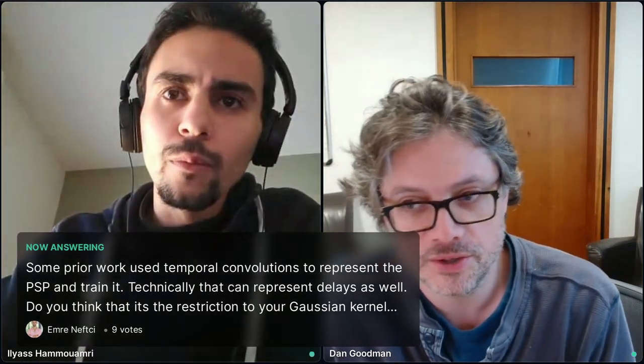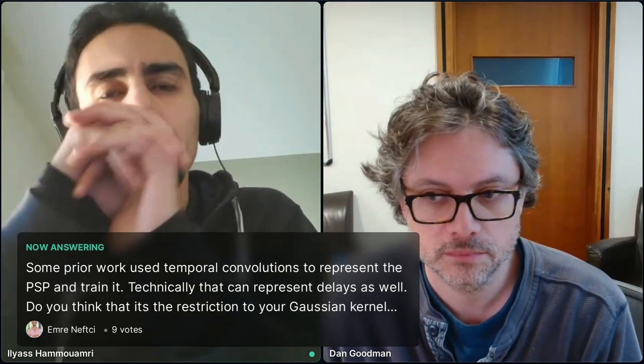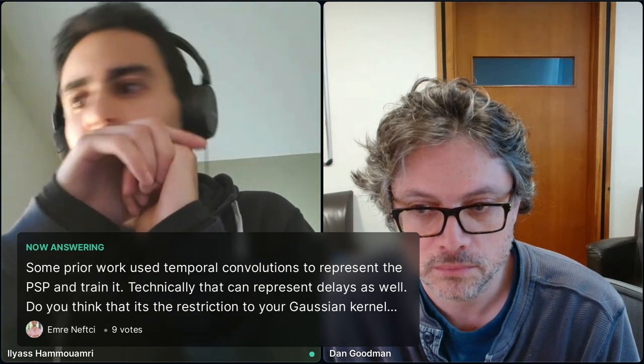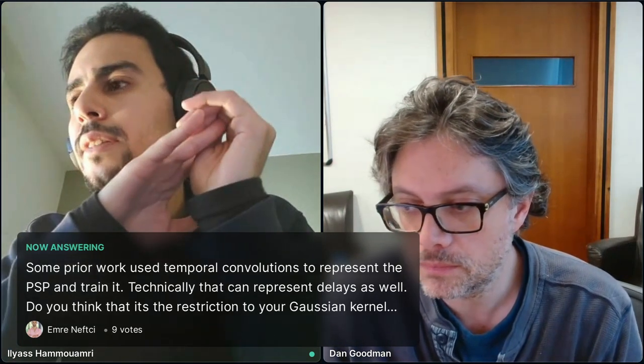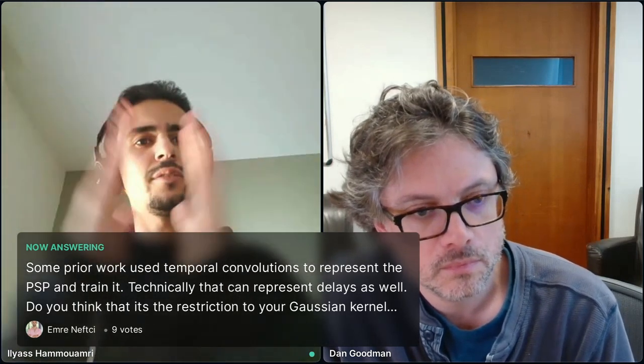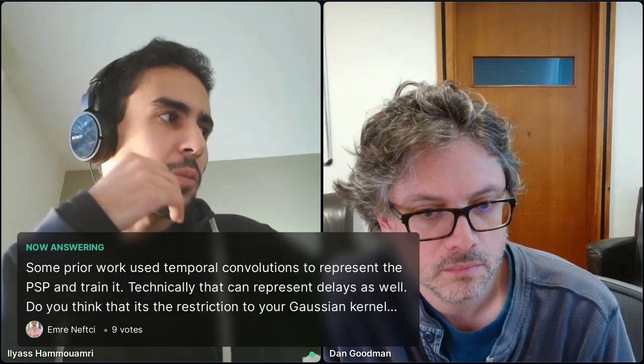All right, so the next question is from Emre, he says, some prior works used temporal convolutions to represent the PSP and train that. And technically that can represent delays as well. Do you think that it's the restriction Gaussian kernel that makes the difference? I mean, I think, yeah, I think I saw some works that use the temporal convolutions as well with PSP models. I think the difference is that, first of all, I don't, I'm not sure if it can lead to a network which is compatible with neuromorphic chips by, because the Gaussian kernel allows us to start with a big, with a wide distribution and remove like this. It's more, it's more flexible, but yeah, I'm not sure if there are more differences than this. So I think for us, it is. Okay.